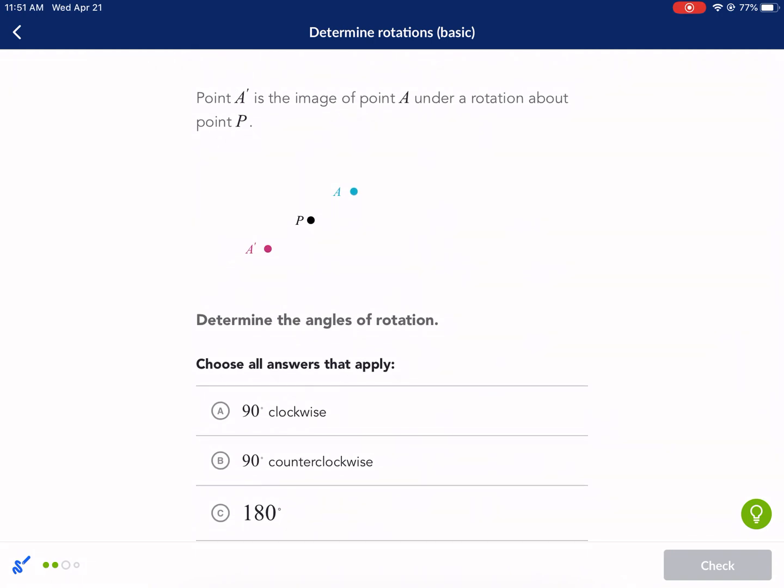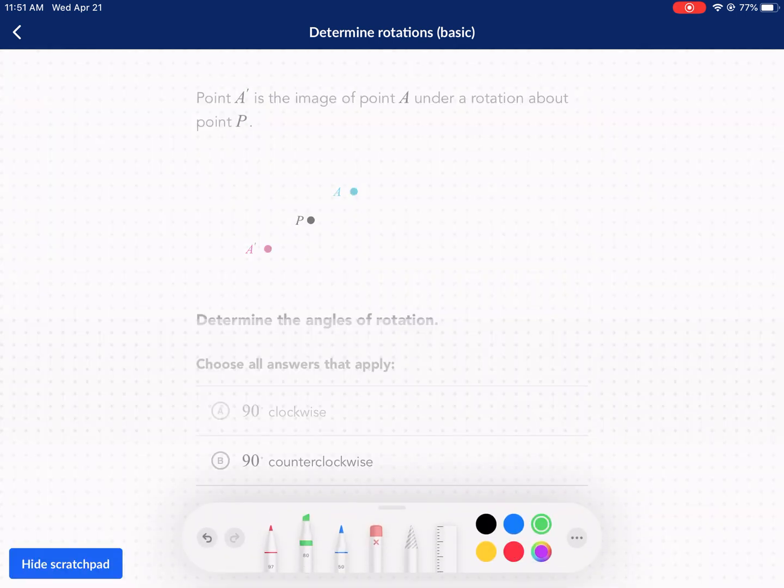Point A prime is the image of point A under rotation about point P. Okay, again, same thing. We're going to highlight both points, and we're going to draw a line connecting them to the center. And we're going to measure that angle. Again, it's 180 degrees. It's a straight angle.